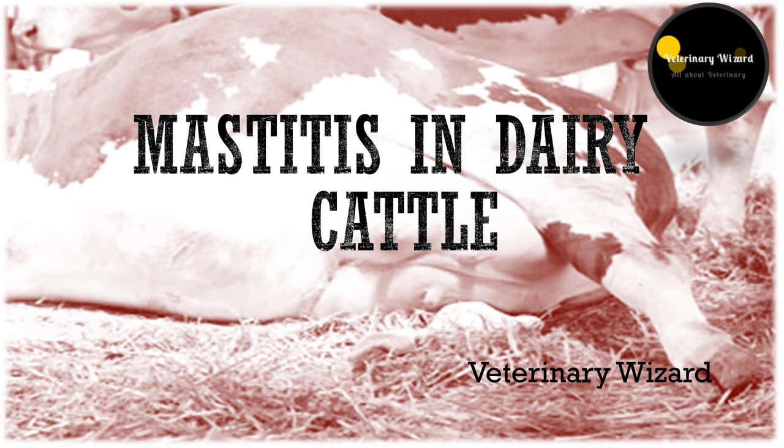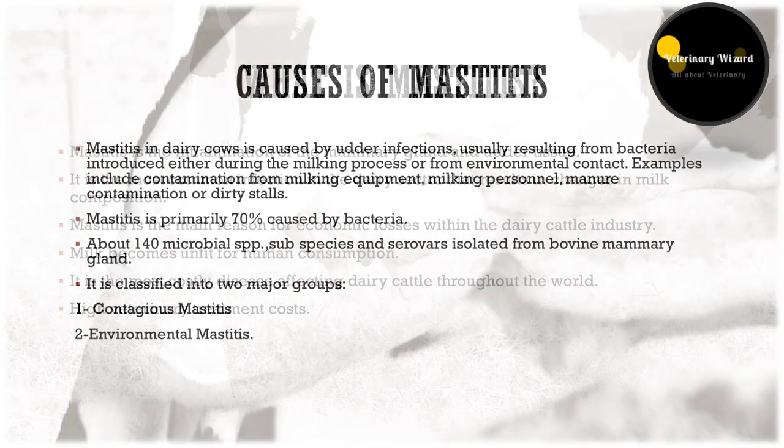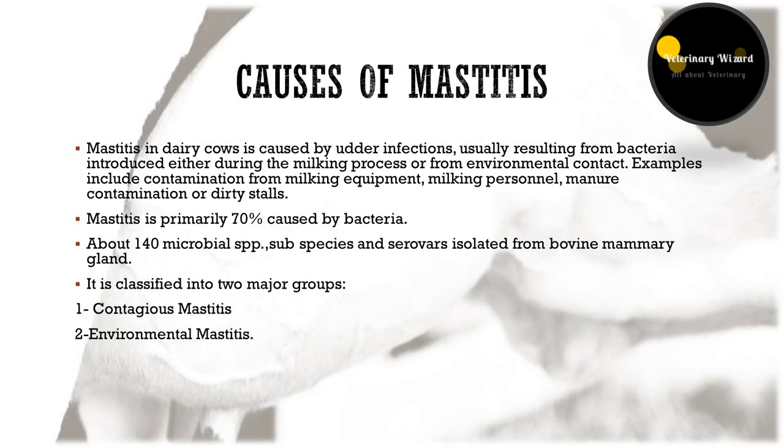Mastitis is the main reason for economic losses within the dairy cattle industry and it is the most costly disease affecting dairy cattle throughout the world. Basically, mastitis is the inflammation of the mammary gland and udder tissue. It is the most common infection that occurs in dairy industry and has huge loss in production with high veterinary treatment costs. Mastitis changes the composition of the milk, making it unfit for human consumption.